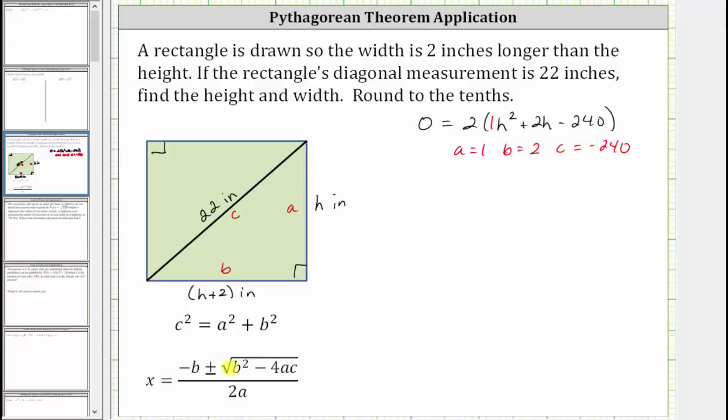So using the quadratic formula shown here below, we have h instead of x. h equals negative b, which is negative two, plus or minus the square root of b squared, which is two squared, minus four times a times c, which is four times one times negative 240, all over two times a, which is two times one.